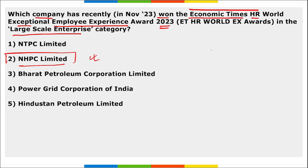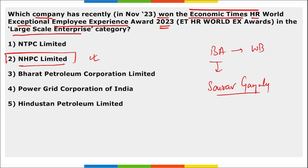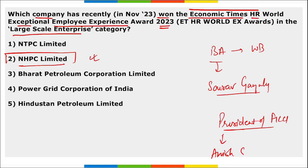Who has been recently appointed as the brand ambassador of West Bengal? Sourav Ganguly. Then, who has been appointed as the president of FICCI? Anish Shah has been appointed as the next president of FICCI.